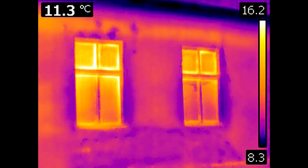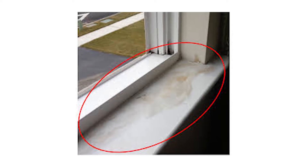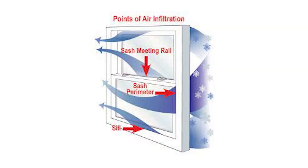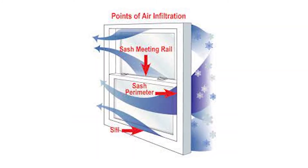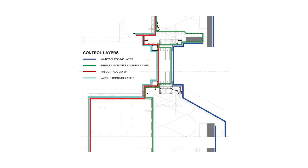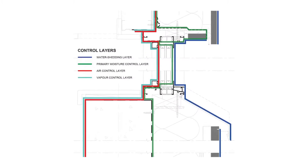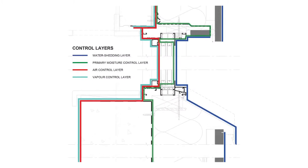First, a window is basically a hole in your house. It's usually the least insulated part of the house, the most common area for water damage to occur, and a prime suspect when it comes to drafts and air infiltration. We talked about control layers in several past episodes, and windows are the mortal enemies of control layers.